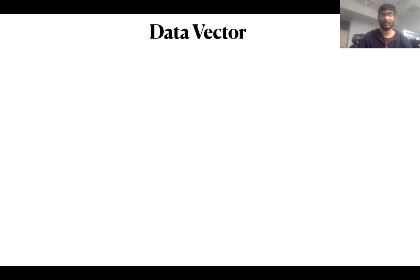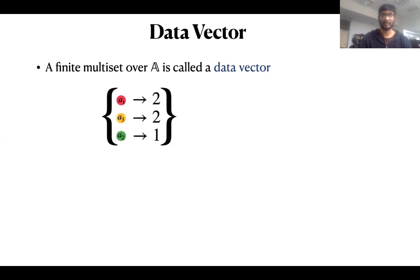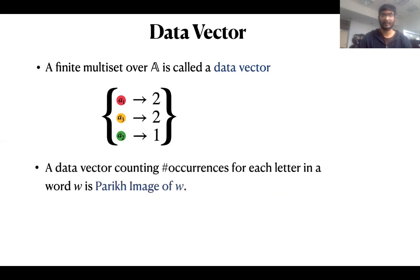Now we define a data vector. A data vector is a finite multiset over atoms. For example, this data vector says that A1 occurs two times, A3 occurs two times, and A2 occurs once. For each word recognized by a register automaton, we can associate a data vector which counts the number of occurrences of each datum. We call this the Parikh image of the word. For example, for word w, the Parikh image is the data vector shown above.